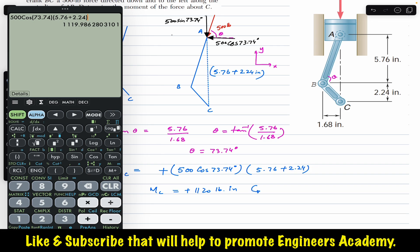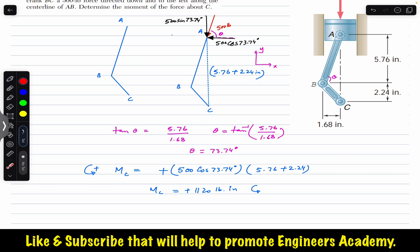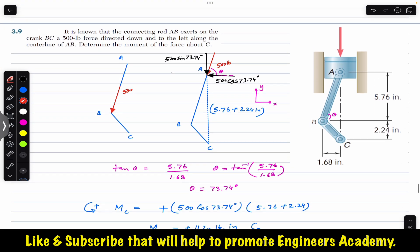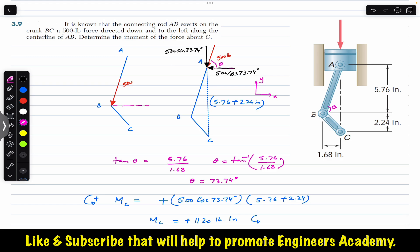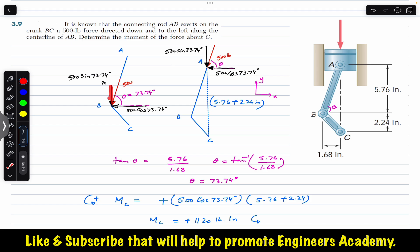The moment about point C is 1120 pound-inches counterclockwise — this is the result of the first method, resolving the force at point A. Now for the second method, resolving the force at point B: again we have the same 500-pound force at point B making the same angle theta of 73.74 degrees with the horizontal. Resolving into components, the horizontal cosine component is 500 cos(73.74°) and the vertical sine component is 500 sin(73.74°).